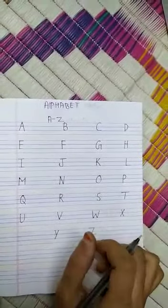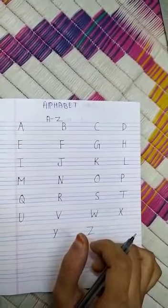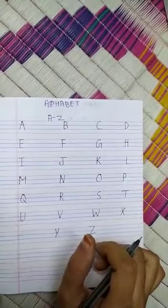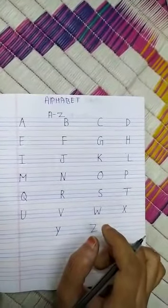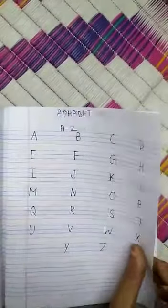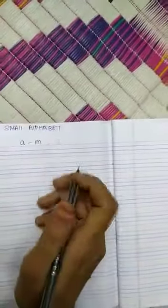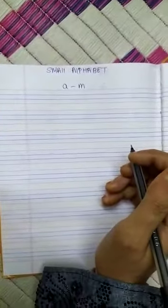Which alphabet we have learnt? Capital Alphabet. Okay, from A to Z. Now we are moving to our next topic, Small Alphabet. Here, Small Alphabet. So children, here we will learn how to write Small Alphabet from A to M. Let's see how to write the Alphabet from A to M.